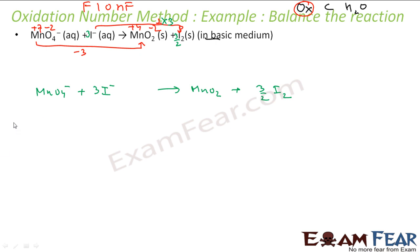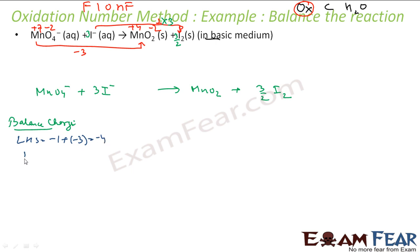Now balance charge. LHS charge: minus 1 plus 3×(minus 1) equals minus 4. RHS charge: zero plus zero = 0. It is basic medium so we add OH⁻. We cannot add to the LHS as it would become more negative. So we add 4 OH⁻ to the right-hand side, making RHS charge minus 4. Charge is balanced.